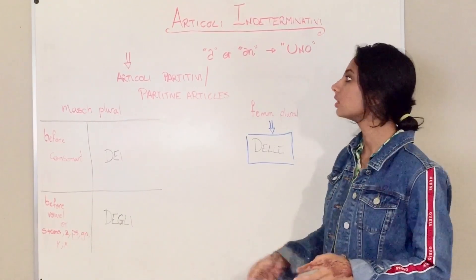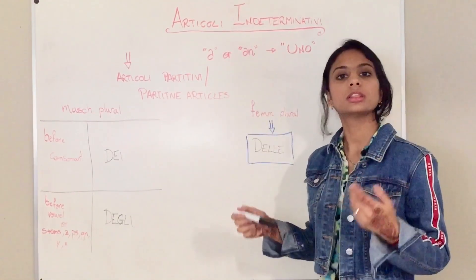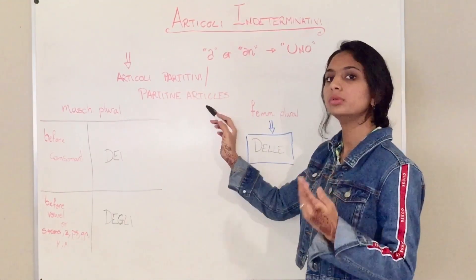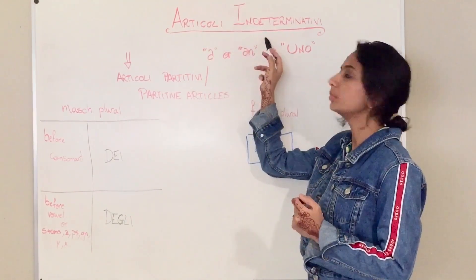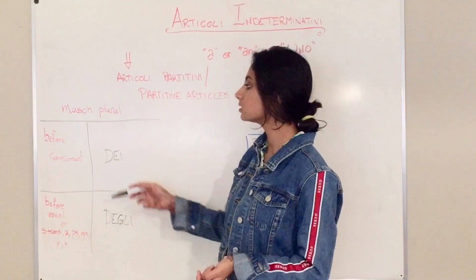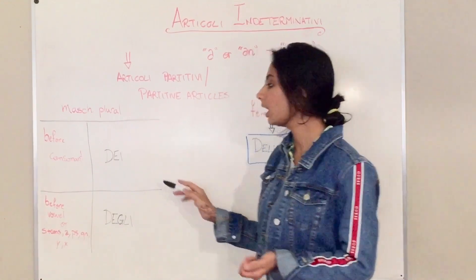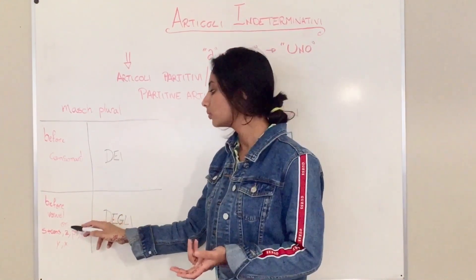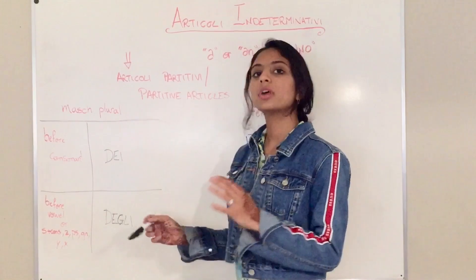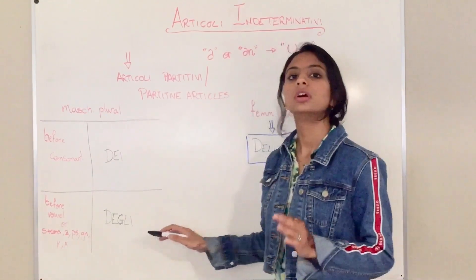Now let's see the plural ones. These are called articoli partitivi — partitive articles. Partitive articles are the plural of the indefinite articles. For masculine plural there are two rules: before a consonant there is dei — D-E-I — and before a vowel, s plus consonant, z, ps, gn, y, or x there is degli. So you just have two options.